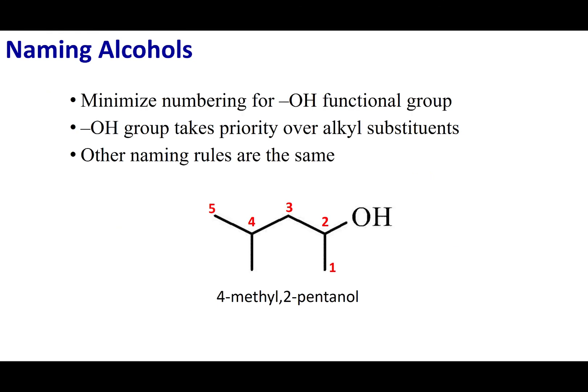When looking for the longest chain containing the alcohol, you have to tell me where that alcohol is. Remember first point of difference — I want my priority group, the functional group, to get the lowest number. When you have an alcohol, you number the chain such that the alcohol receives the lowest number possible. In this case, the longest chain containing the alcohol has five carbons, and we number it so the alcohol is on carbon two: 2-pentanol.